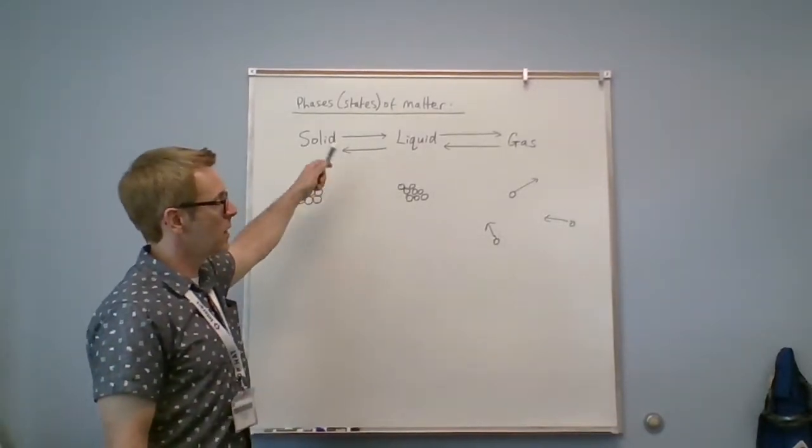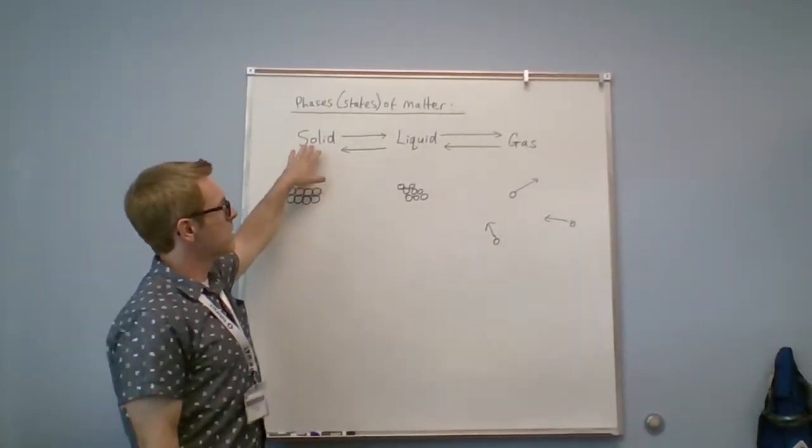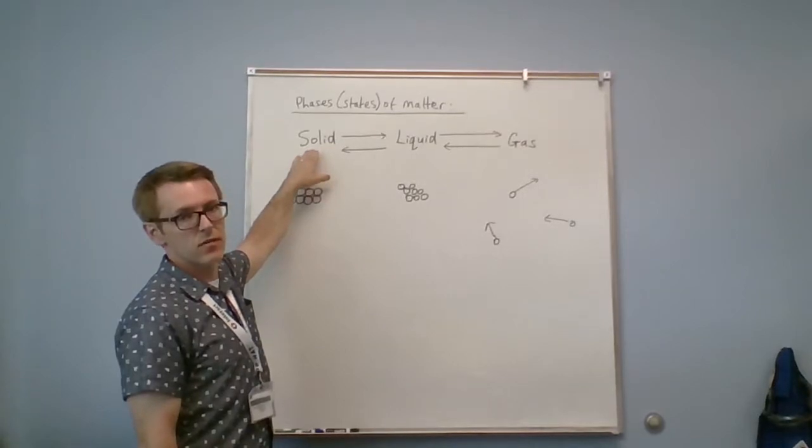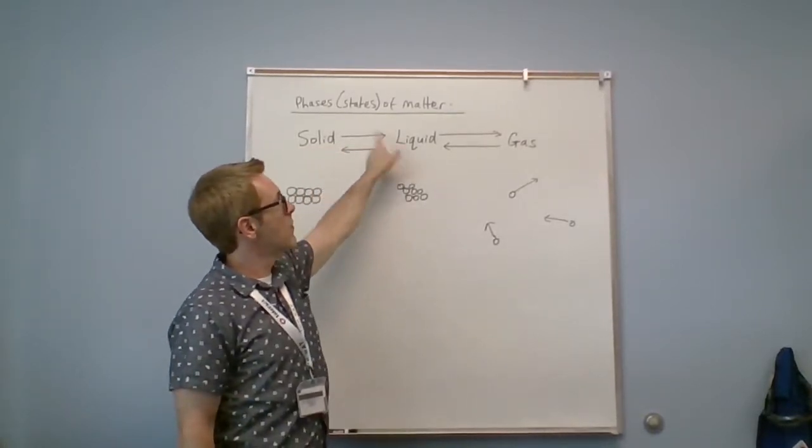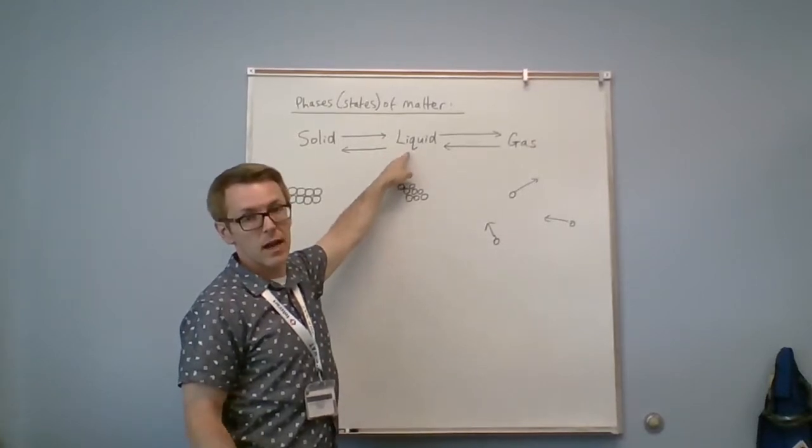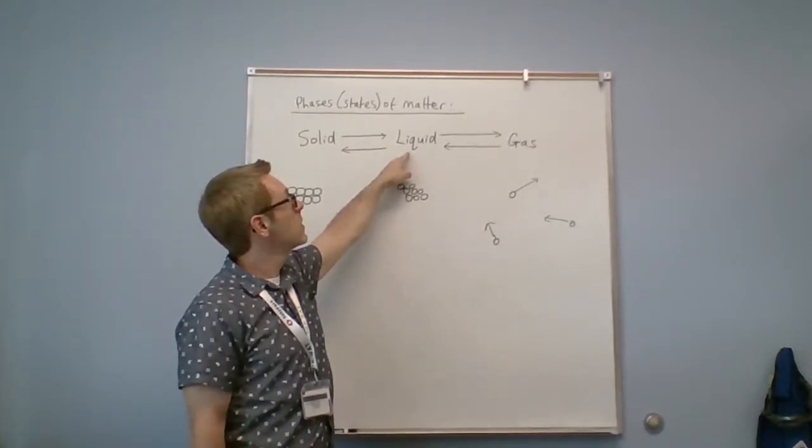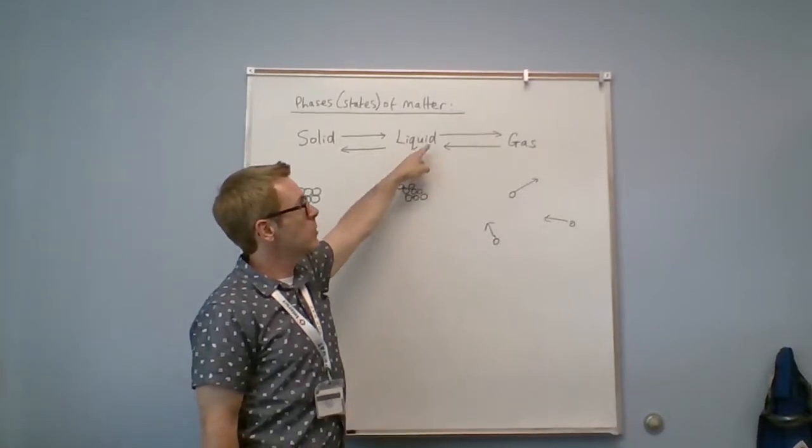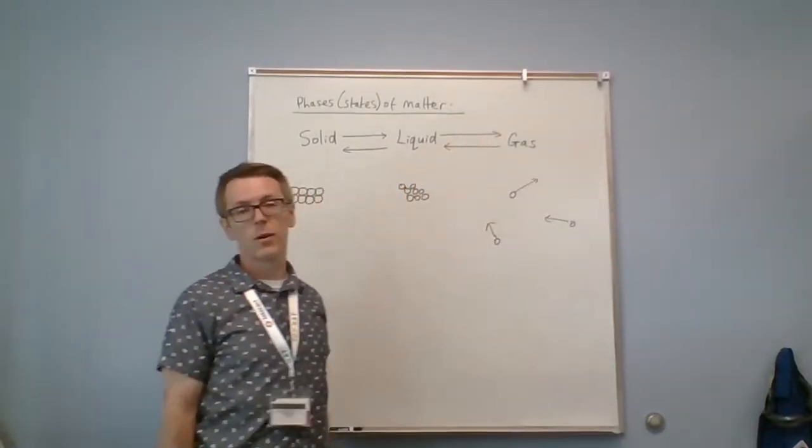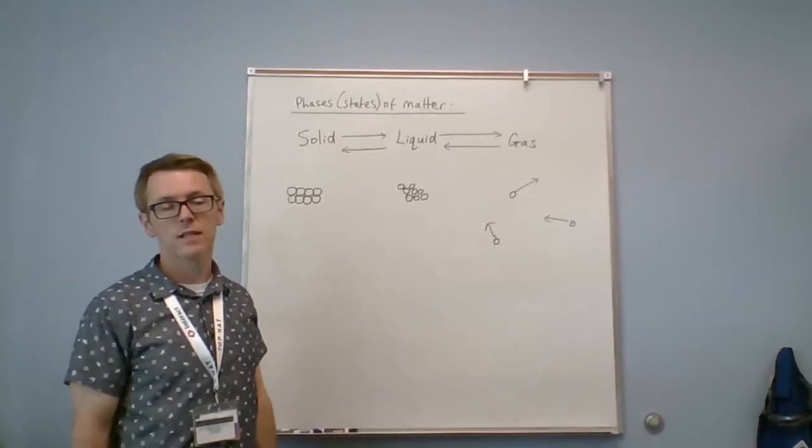So here's an example of physical changes. For example, you take a solid piece of water, a piece of ice. You can convert that solid to a liquid by adding energy. You can heat the ice up, melt the ice to make a liquid. You can then boil the liquid to make steam, which is the water in its gaseous phase.